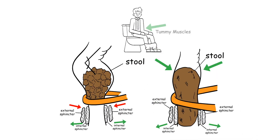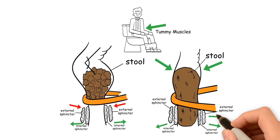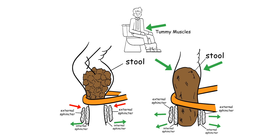When we sit down on the toilet, a sequence of steps begins, with gentle pressure from the tummy muscles pushing stool through the rectum, straightening out the muscles around the back passage and relaxing the external anal sphincter. This allows stool to exit the anus and is how we pass a stool.